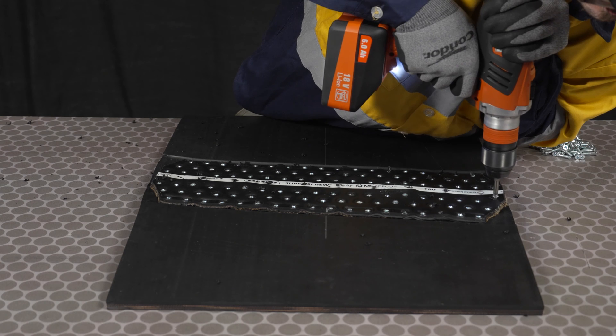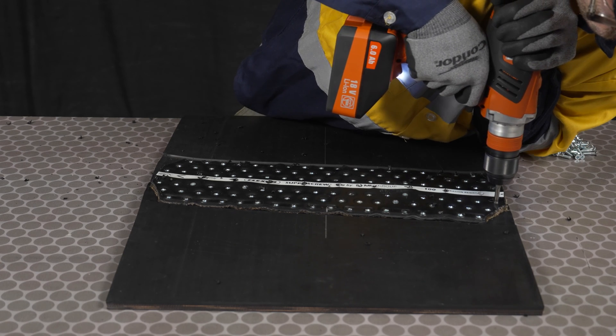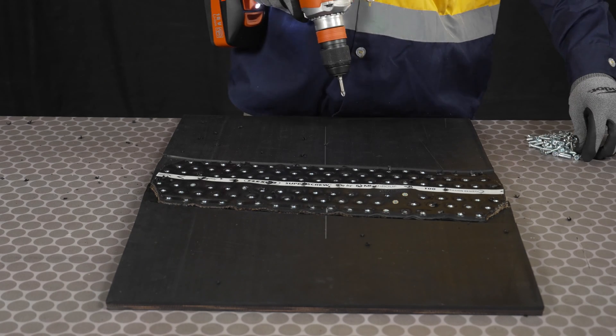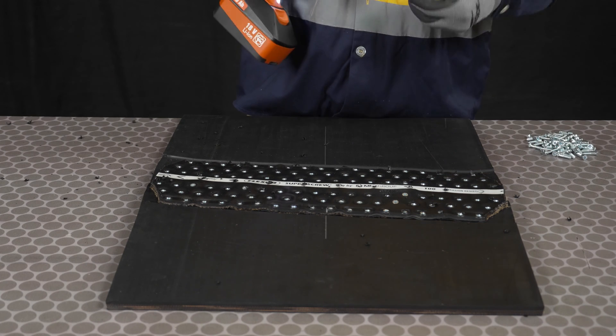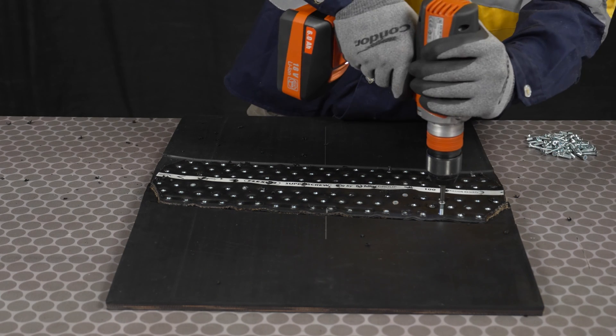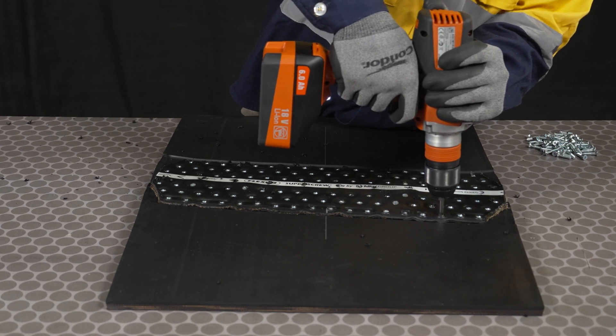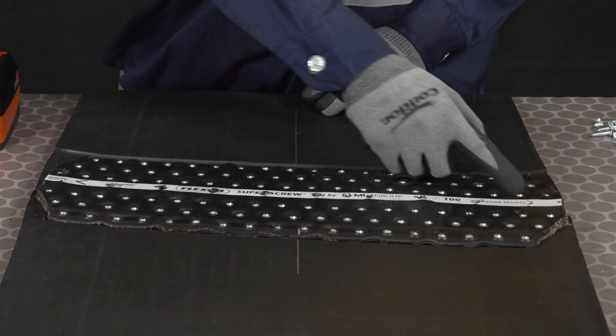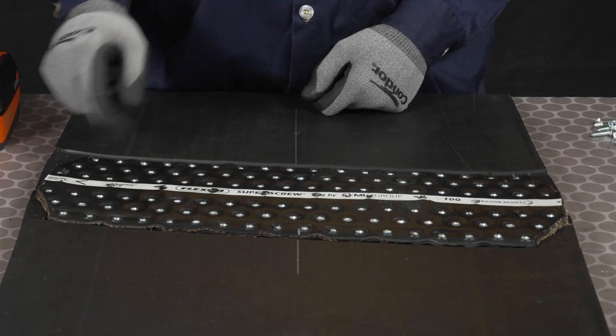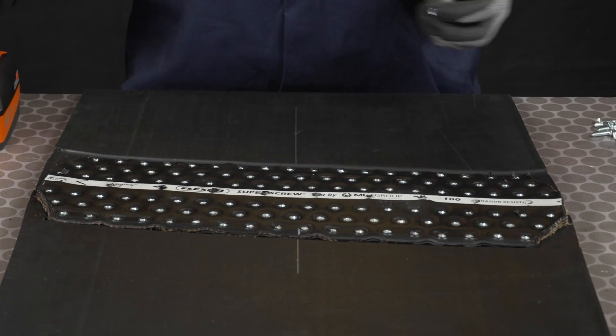Alternate from side to side, row to row, installing all remaining screws in both sides of the splice, leaving the screws in the center stripe for last. Finish by installing the screws in the center stripe using an alternating pattern.